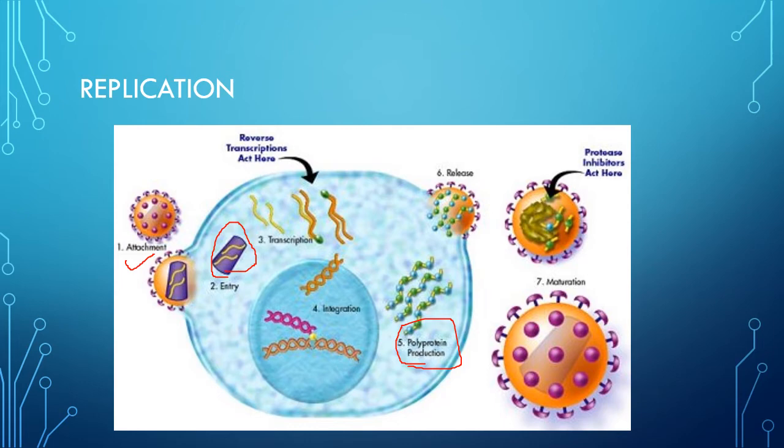In the integrated state, HIV establishes a latent infection for a variable period. However, HIV is different from other latent viruses as it is able to replicate even in the latent state and is infectious to neighboring cells. The life cycle continues: attachment, entry, transcription, pre-integration complex, integration, release from host cell, then maturation — and the mature cell can infect other host cells.